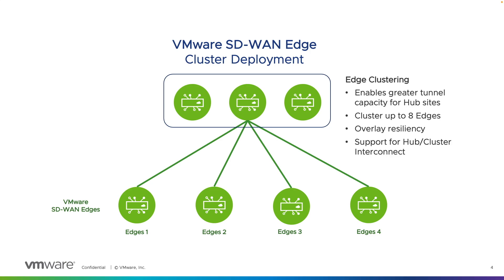There may be design requirements that call for multiple hub sites to have this cluster deployment. In that case, cluster interconnect is possible, allowing an increase in the range of spoke edges that can communicate with each other, meaning the spoke of one hub can communicate with the spoke of another hub through this interconnection made between two cluster deployments.